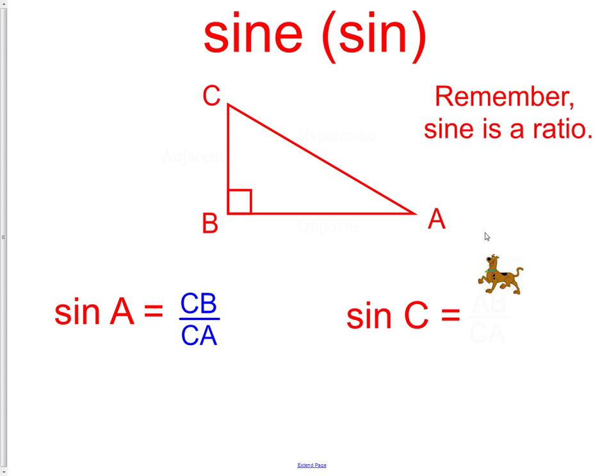Now let's move Scooby up to angle C. From where he is at at angle C, we now would have the opposite being AB, and the hypotenuse would still be CA. So our ratio from angle C, if we did sine of C, we would do the length of AB over the length of CA.